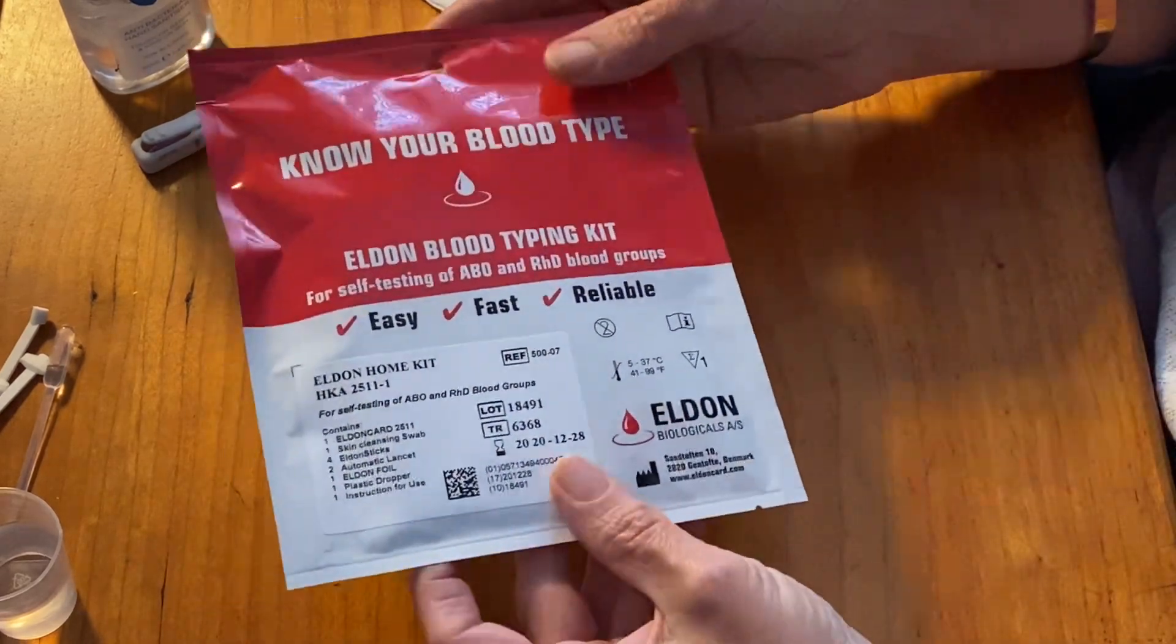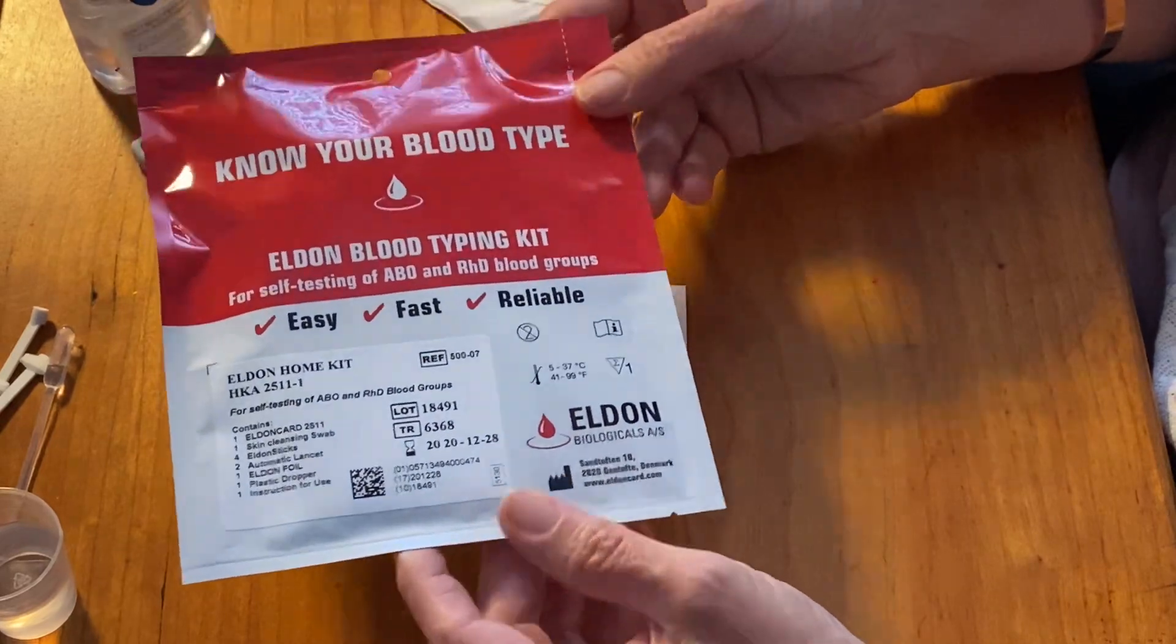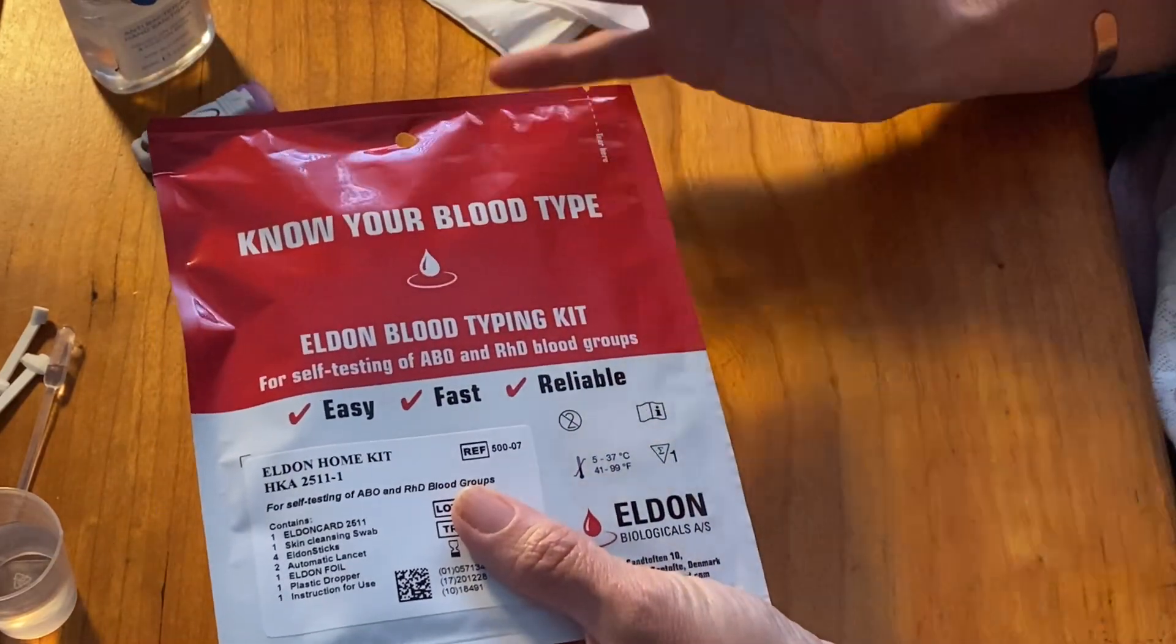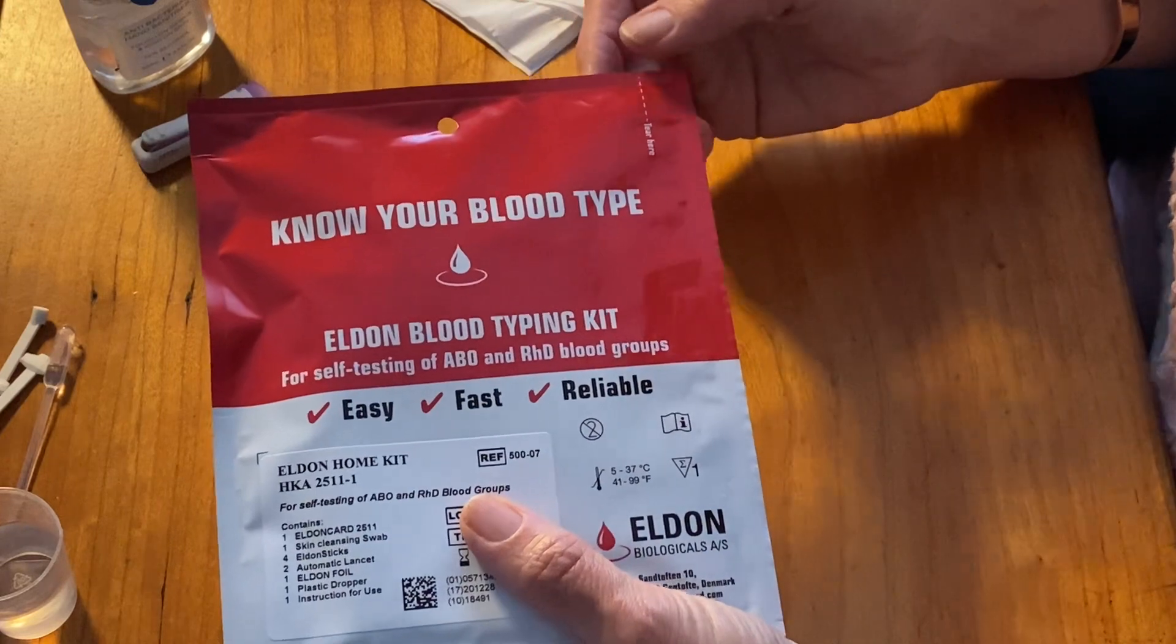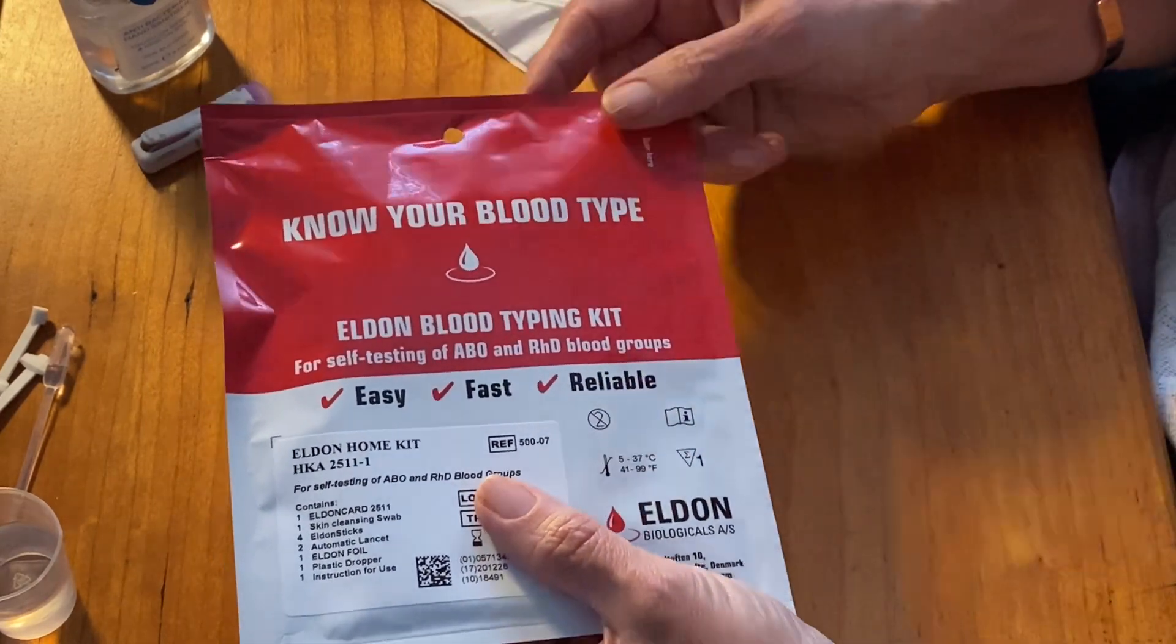You can order these cards online, they're called Eldon Blood Typing Kit. They're available on Amazon. They are about 15 to 20 euro to buy and each comes with just one testing kit.